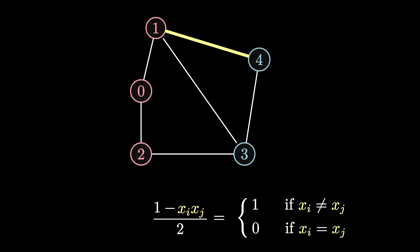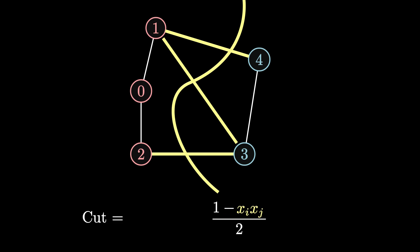With this notation, the value of a cut is given by the sum of the quantity (1 − xi·xj)/2 over all edges. And the MaxCut problem, as the name indicates, is about finding suitable values for the variables xi to make this quantity as large as possible. This innocent-looking problem is actually notoriously difficult to solve, especially for graphs with a large number of nodes and edges.